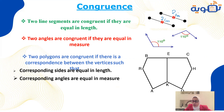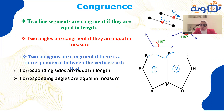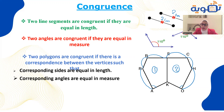Two angles are congruent if they are equally measured — both 110 degrees means they are congruent. For polygons, two polygons are congruent if all corresponding sides are equal in length and all corresponding angles are equal in measure.